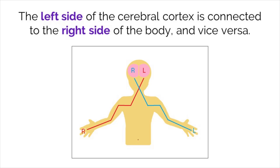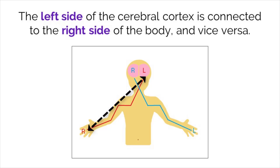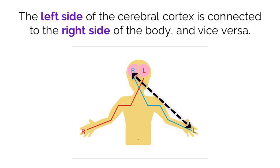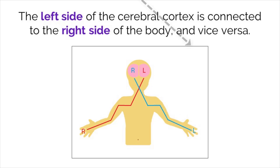When the brain processes information, it does it in a flipped manner. Information from the right side of the body gets processed in the left side of the brain, and the left side of the brain controls movement of the right side of the body. In the opposite manner, the right side of the brain controls and receives signals from the left side of the body.